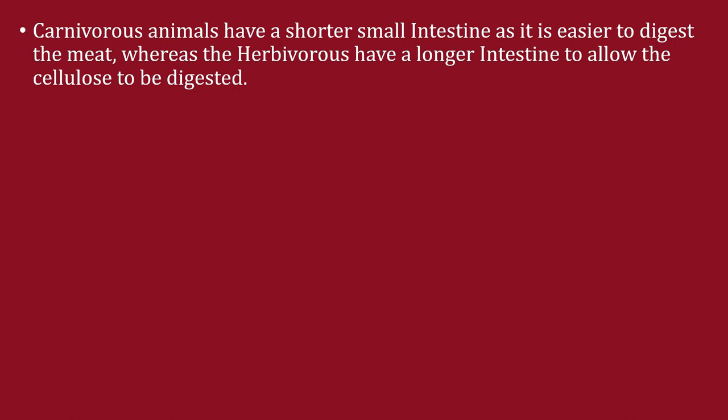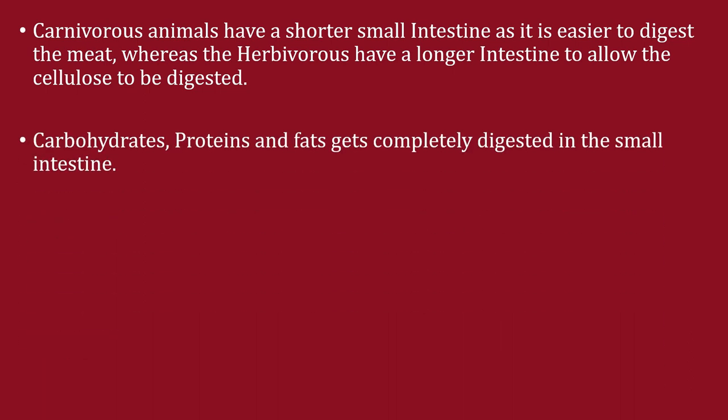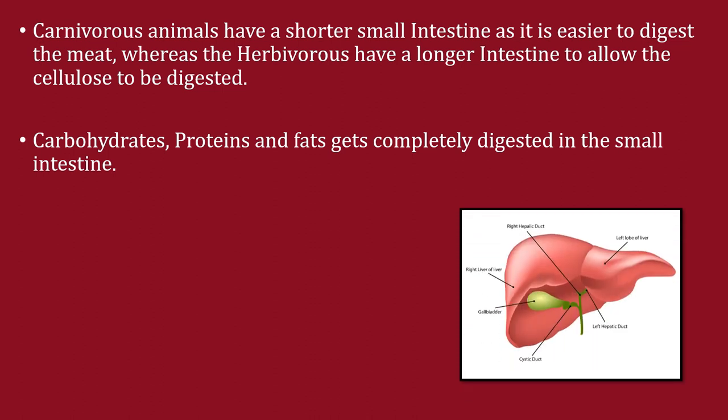Carnivorous animals have a shorter small intestine as meat is easier to digest, whereas herbivorous animals have a longer intestine to allow cellulose to be digested. Carbohydrates, proteins, and fats get completely digested in the small intestine.